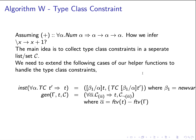We extend our algorithm W to handle type class constraints. We have made some assumption that the plus operator has the type int to int to int, which is not true in Haskell. In Haskell, the plus operator has the type scheme for all alpha, num alpha, alpha goes to alpha goes to alpha — which is a type class context.